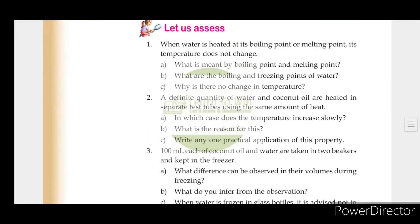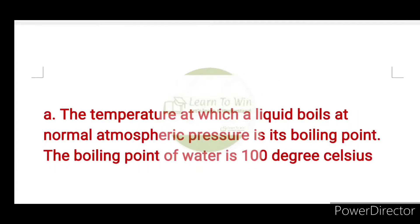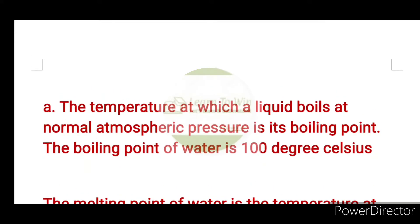When water is heated at its boiling point or melting point, its temperature does not change. What is meant by boiling point and melting point? The boiling point is the temperature at which a liquid boils at normal atmospheric pressure. The boiling point of water is 100 degree Celsius.